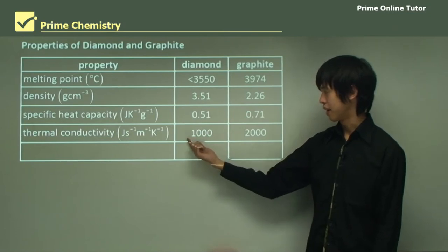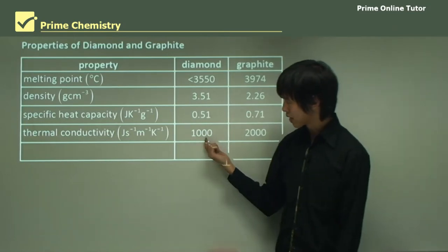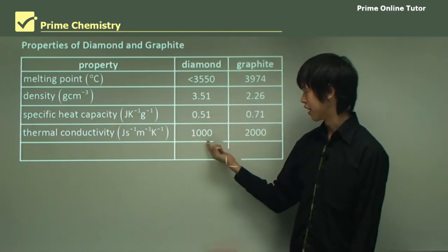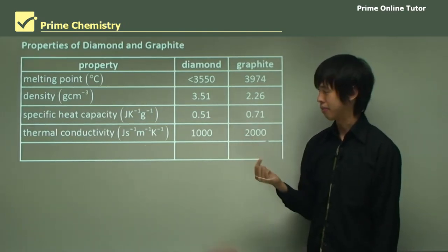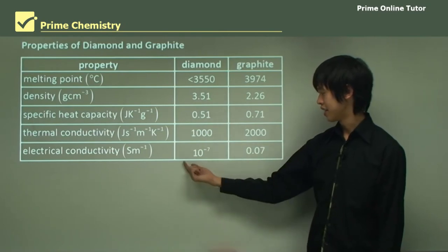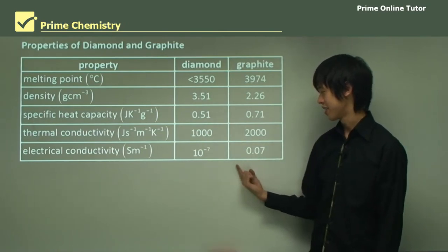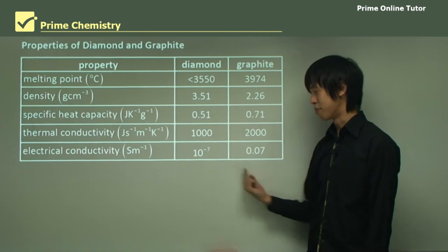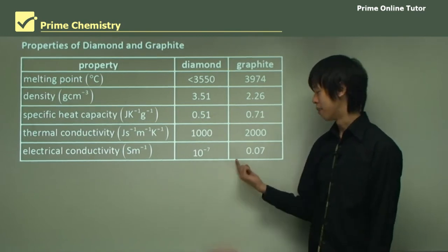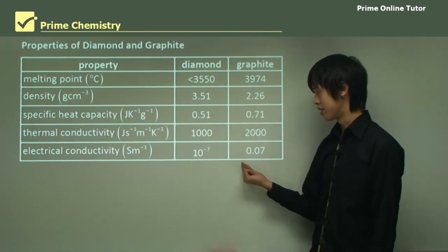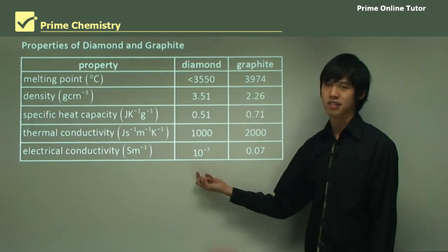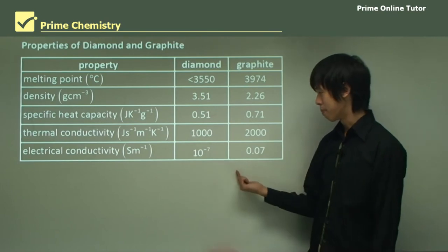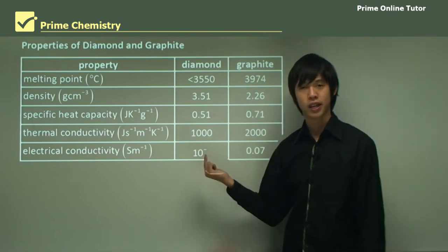We have 1,000 joules per meter second Kelvin, and here 2,000, so about exactly double. And the electrical conductivity is quite high compared to diamond. This is 0.07 semen per meter, whereas this is 10 to the minus 7. So as you can see, much, much higher electrical conductivity compared to diamond.